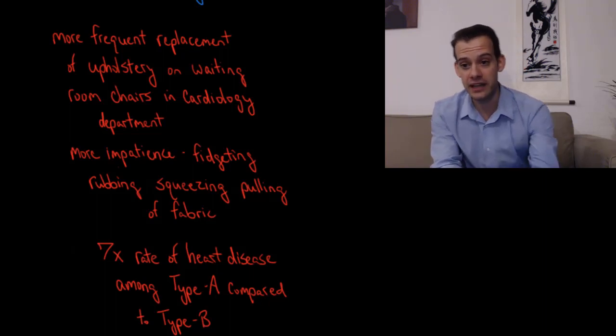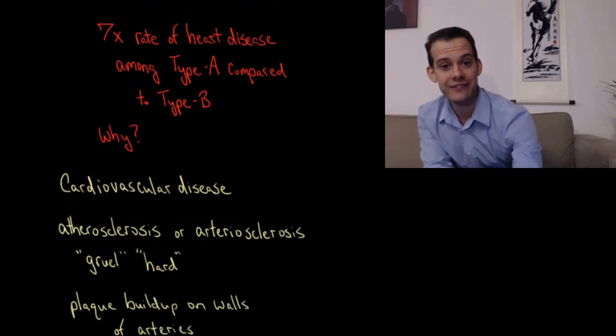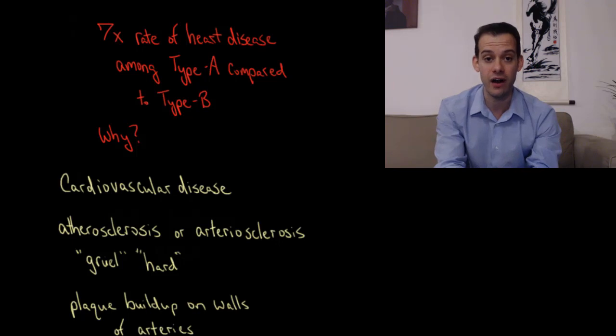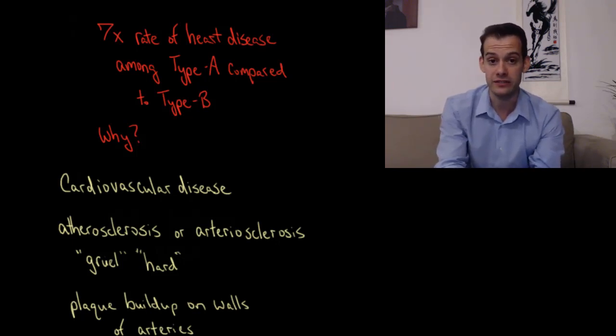Now Friedman and Rosenman initially found that amongst patients identified as having a type A personality, they had seven times the rate of heart disease compared to those with a type B personality. So why is this?